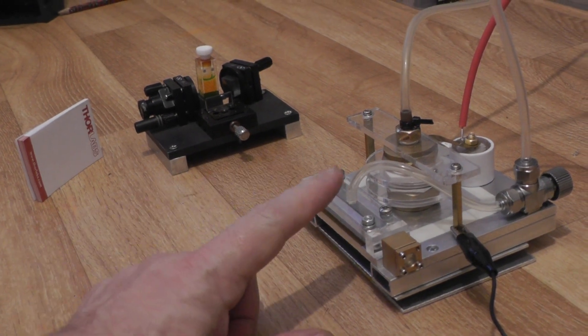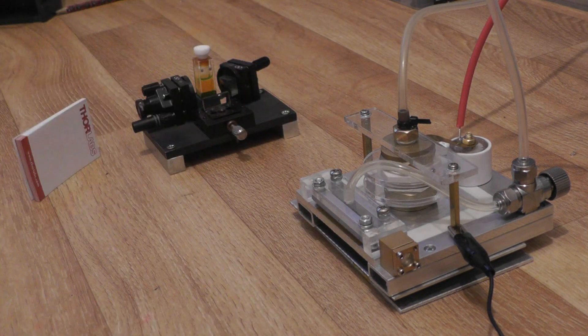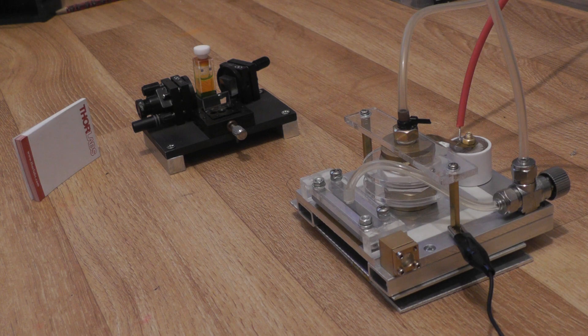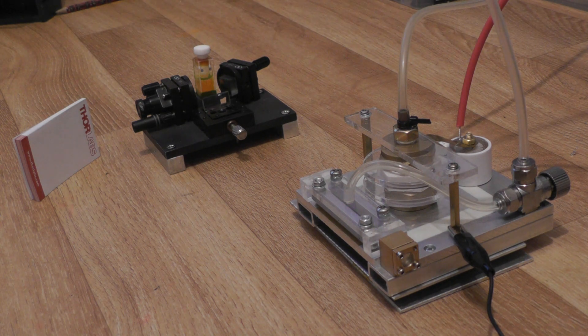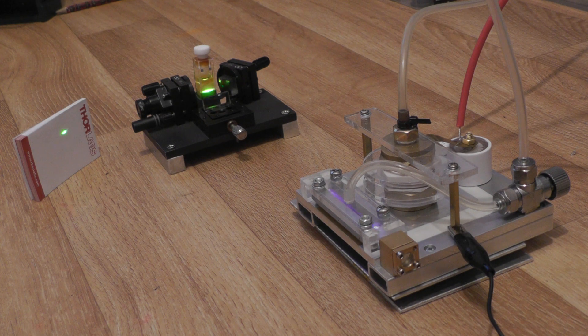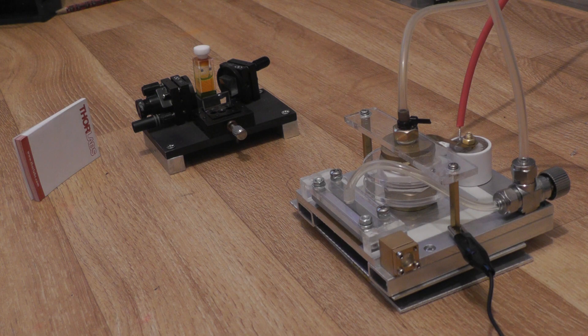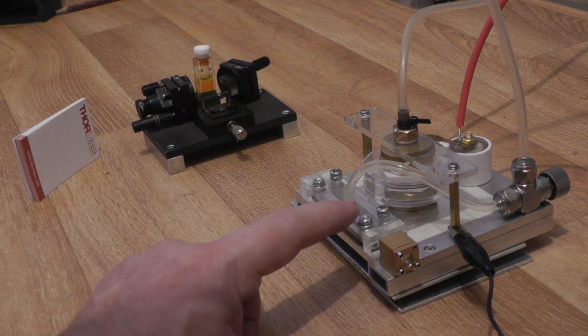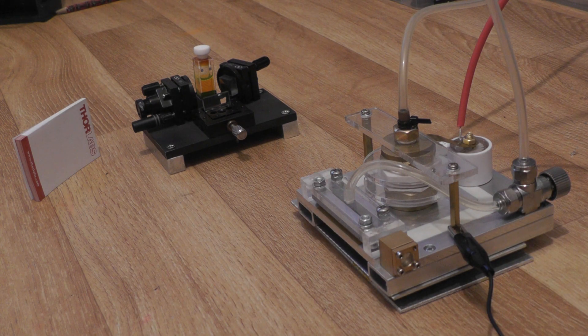So this is the miniature nitrogen laser all set back up again. I've got my homemade doorknob capacitor at the back there. I've got the dye laser in front of it. Let's fire it up. As you can see, the output's pretty stable. It tails off a little bit because we're not feeding quite enough gas in for the repetition rate.